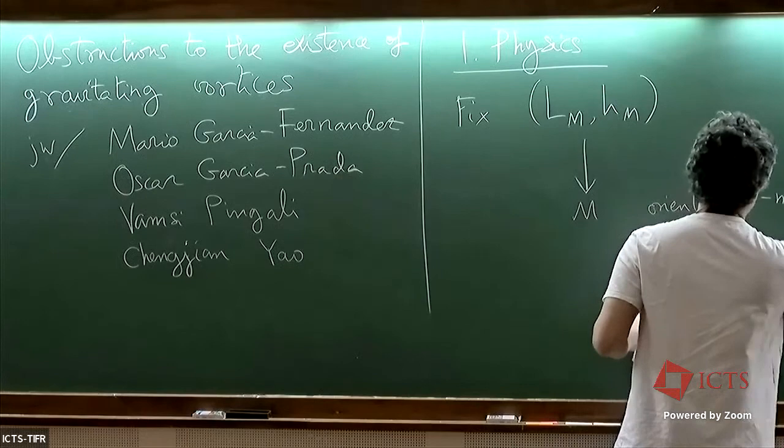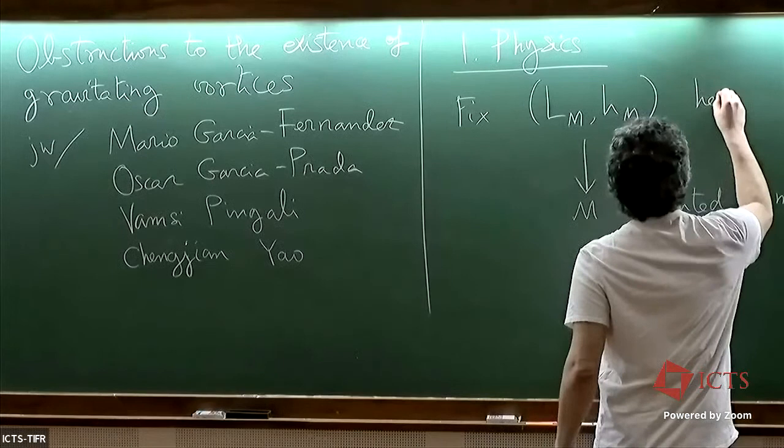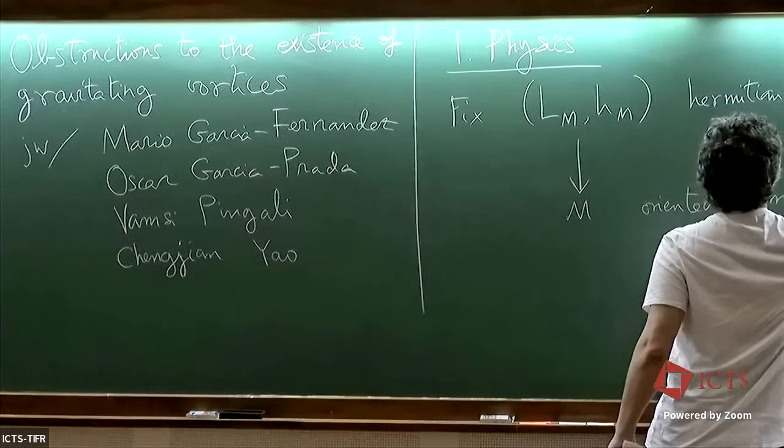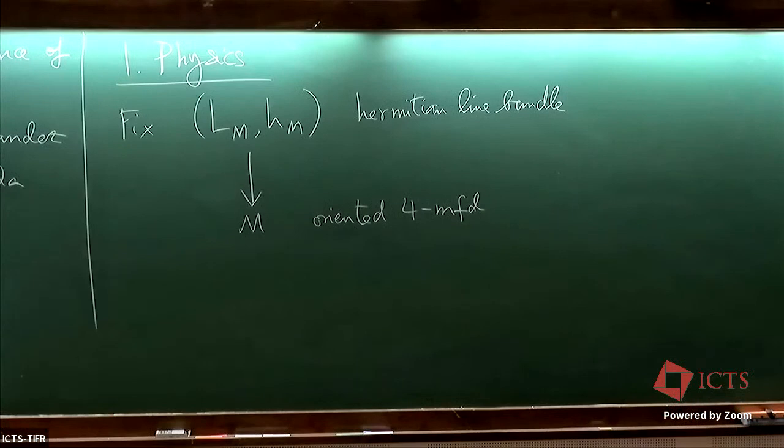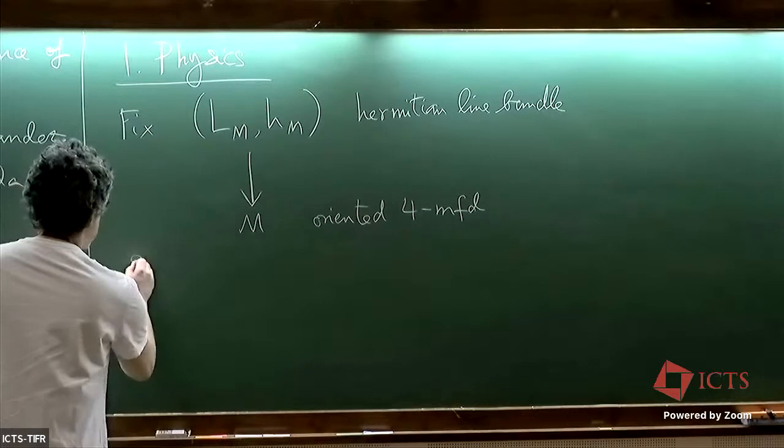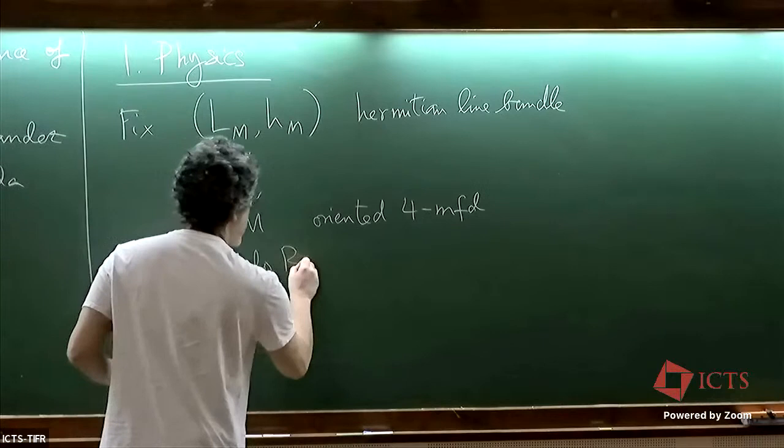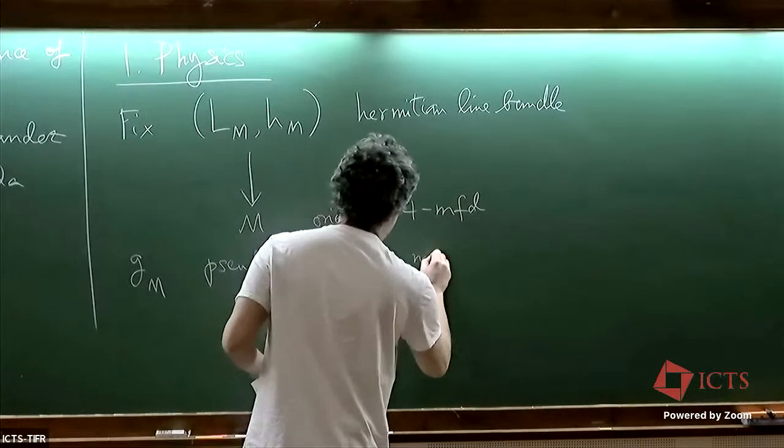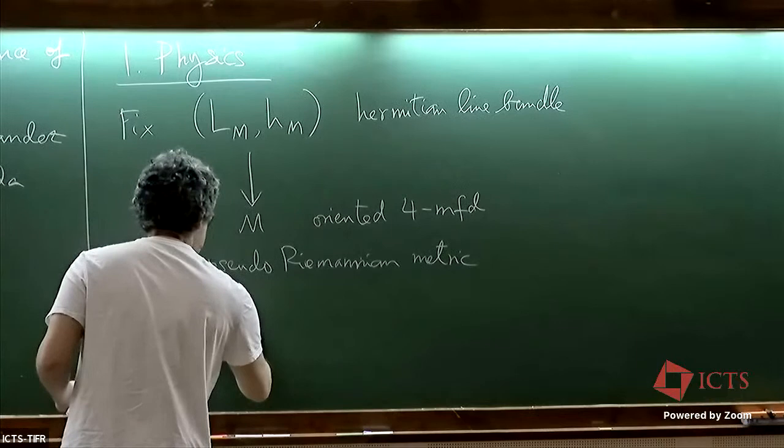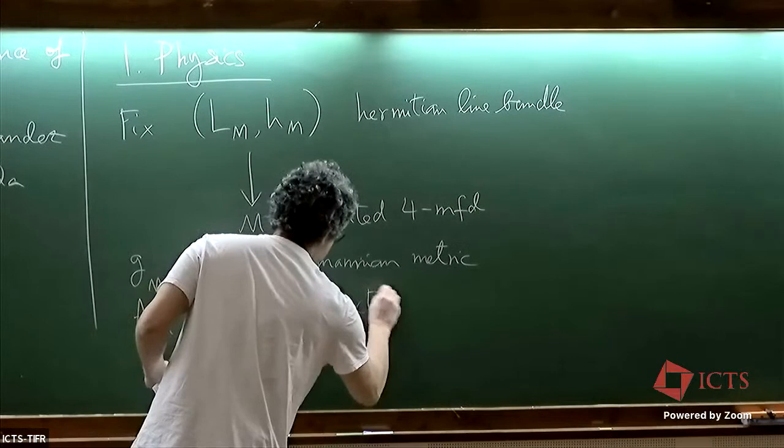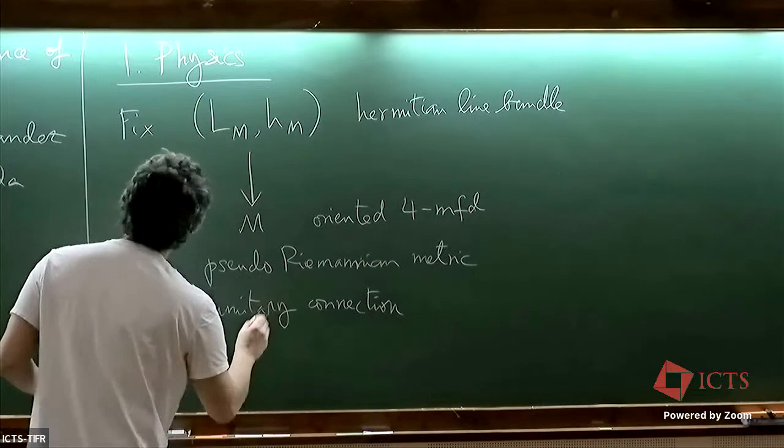So I'll fix spacetime with four manifolds and a Hermitian line bundle. Okay, and I want to couple—I mean study a physical theory which couples of course the Riemannian metric, the unitary connection in the line bundle, and the Higgs field. So that will be a section, a smooth section of the line bundle.